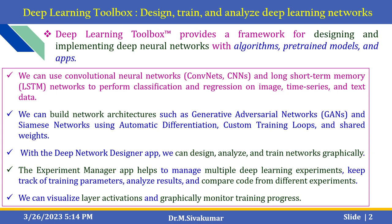Using the Deep Learning Toolbox, you can use convolutional neural networks and long short-term memory (LSTM) networks to perform classification and regression on image, video, time series, and text data. For text data, this relates to natural language processing. You can also build network architectures such as generative adversarial networks (GANs) using automatic differentiation, custom training loops, and shared weights.